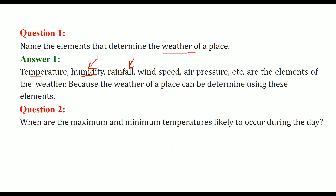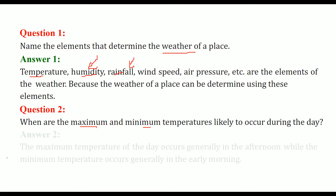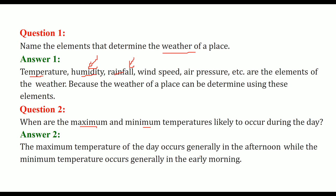What are the maximum and minimum temperatures likely to occur during the day? In the afternoon you will record maximum temperature, and minimum in the early morning. The maximum temperature generally occurs in afternoons from 12 to 3 o'clock, and the minimum temperature from night 2 to morning 5.